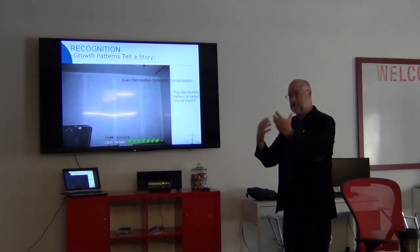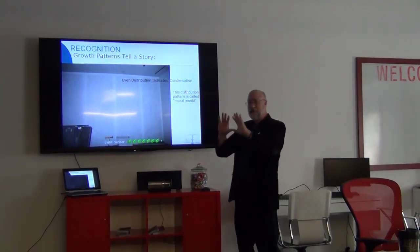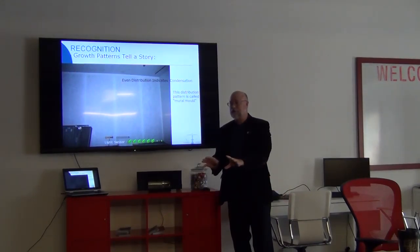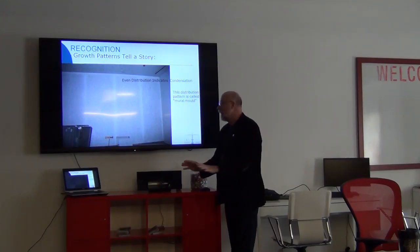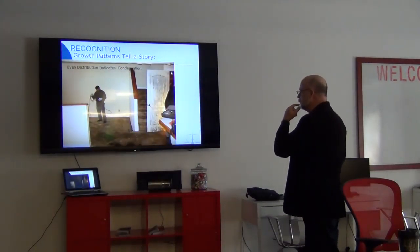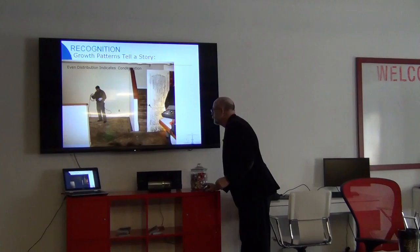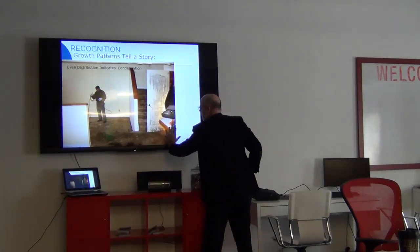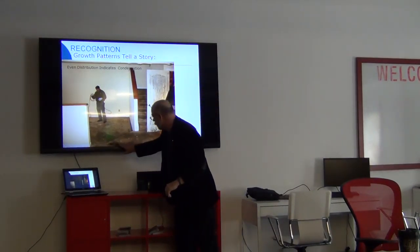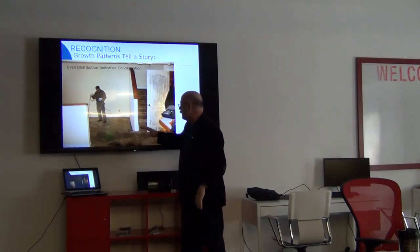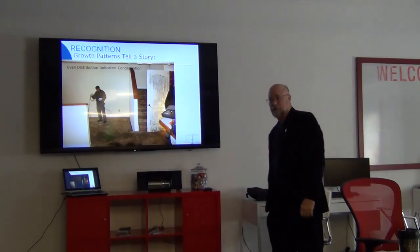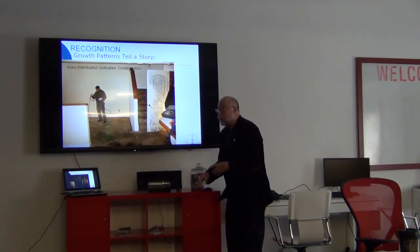Mold growth tells us a story. Even distribution like that points to condensation — no water leaks. A water leak produces a clear demarcation of colonization. In another structure, the door showed even mold distribution — condensation again. The carpet was so wet it sloshed when you walked on it. We used that house as a scientific investigation, collecting data as we went through.